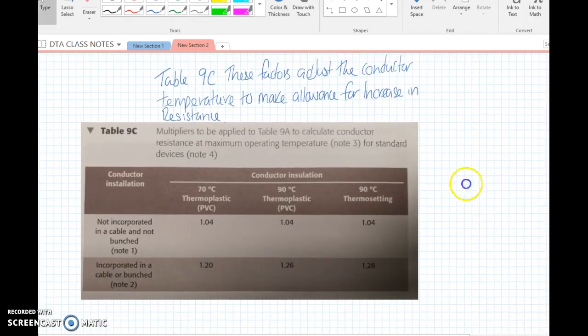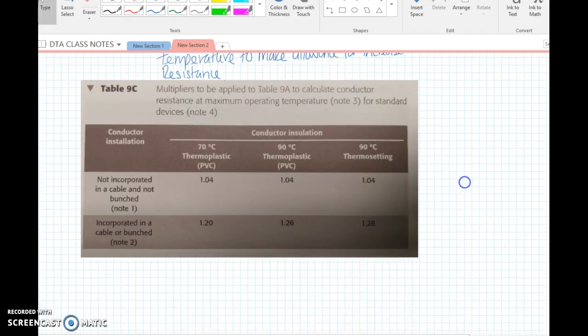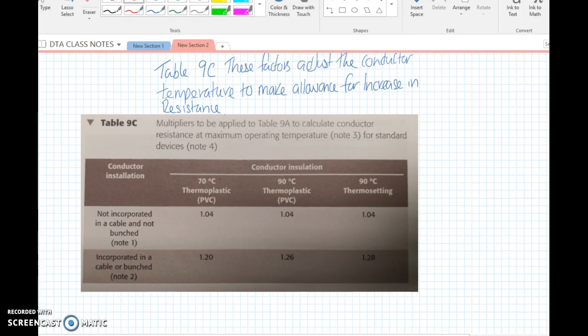The final adjustment factor table: normally our installation cables at 20 degrees will have a certain resistance, for example a 2.5mm R1, 1.5 R2 will have a resistance of 19.51 milliohms per meter at 20 degrees. But that PVC cable can operate up to 70 degrees, which affects its conductor resistance. As electric current flows through the cable, that will cause the resistance to increase.